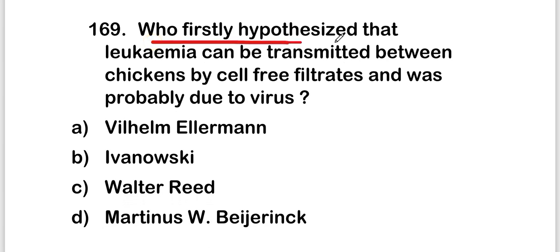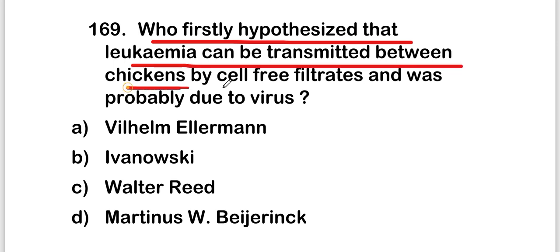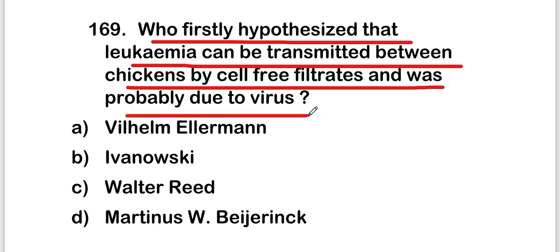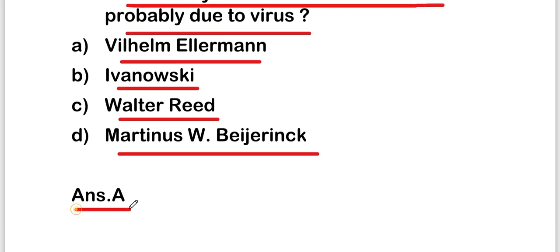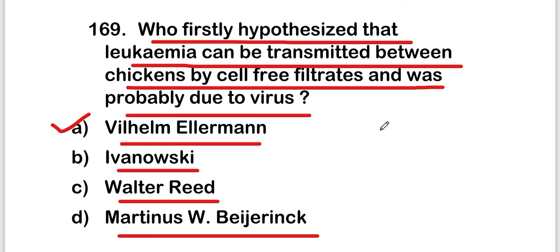Next question: who first hypothesized that leukemia can be transmitted between chickens by cell-free filtrate and was probably due to a virus? Options: Wilhelm Ellermann, Ivanovski, Walter Reed, or Martinez Begerink. The right answer is option A — Wilhelm Ellermann, who first hypothesized that leukemia can be transmitted between chickens by cell-free filtrate.